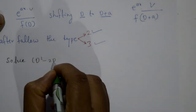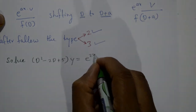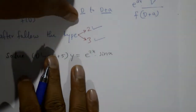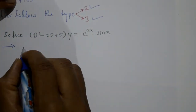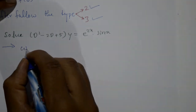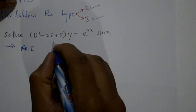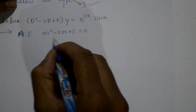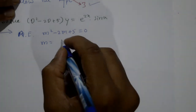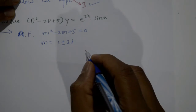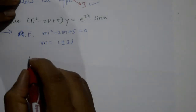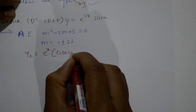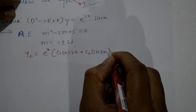Example 1: Solve (D² - 2D + 5)y = e^(2x)·sin x. The auxiliary equation is m² - 2m + 5 = 0. Using the calculator, the roots are 1 ± 2i. The complementary function is yc = e^x(c₁cos 2x + c₂sin 2x).